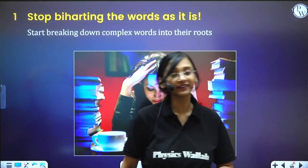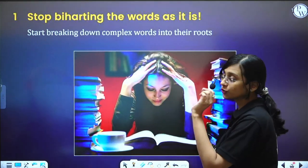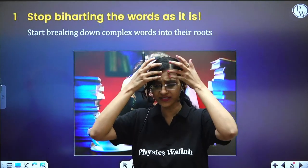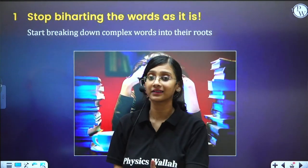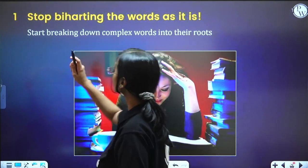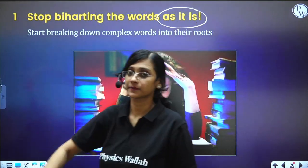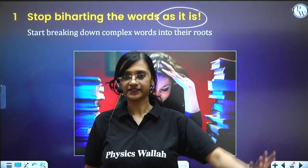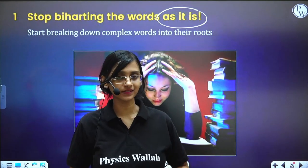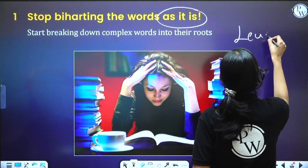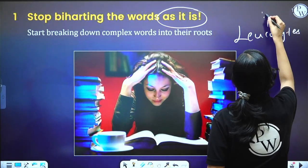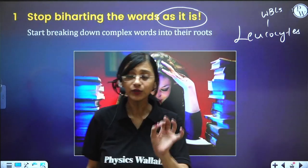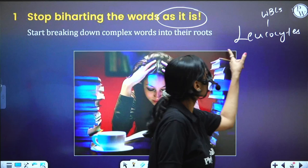The very important mistake that you do is you by-heart things. I know 11th and 12th students won't exactly by-heart the concepts, but when it comes to biology you by-heart the terminology. So stop by-hearting the words as they are. Let's take an example: leukocytes. You would be knowing what leukocytes are — leukocytes are WBCs — and I am very sure you would have by-hearted it just like that. But have you tried understanding what exactly this means?